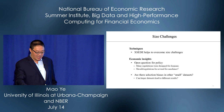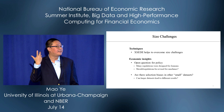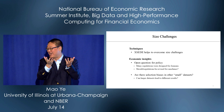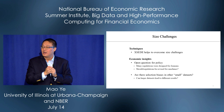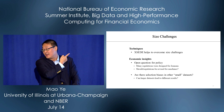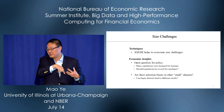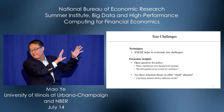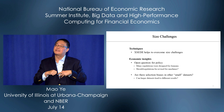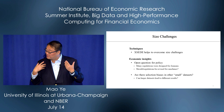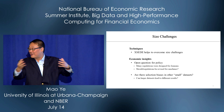I want to use this paper to motivate two things. For techniques: high performance computing helps solve the size challenge. For economic intuitions: first, there are open questions for public policy, because existing regulations were designed for humans, but machine learning and big data bring machine players into the market. Should we revise regulations designed for humans to account for machines? Second, are there sample selection biases in other small datasets we know? If we collect more or larger data, some conclusions from previous literature may change.